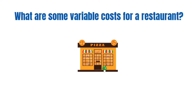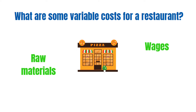Now consider some examples of variable costs for a restaurant. Raw materials is definitely one — if output were to increase, the pizza restaurant would need to ensure they have sufficient dough, cheese, and other ingredients required to produce the pizzas. Another example of variable cost is wages: if output were to increase, workers would need to stay longer to produce, serve, and deliver the pizzas. Fuel for the delivery vans is another. Likewise, if output were to decrease, they wouldn't need these as much and therefore the variable costs would decrease.